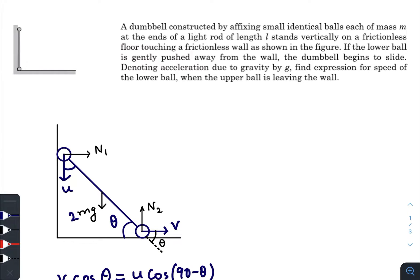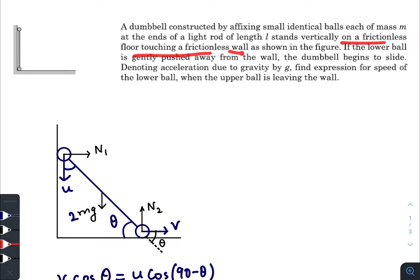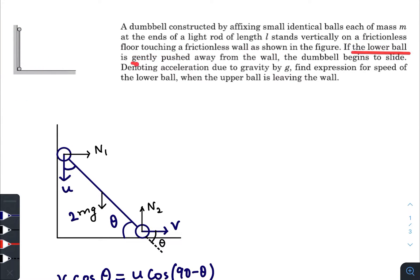In today's question we have a dumbbell constructed by affixing small identical balls each of mass m at the ends of a light rod of length l. It stands vertically on a frictionless floor touching a frictionless wall as shown in the figure. If the lower ball is gently pushed away from the wall, the dumbbell begins to slide. Denoting acceleration due to gravity as g, find the expression for speed of the lower ball when the upper ball is leaving the wall.